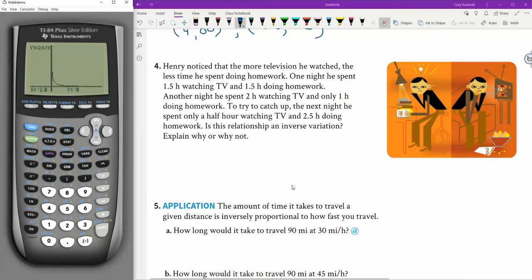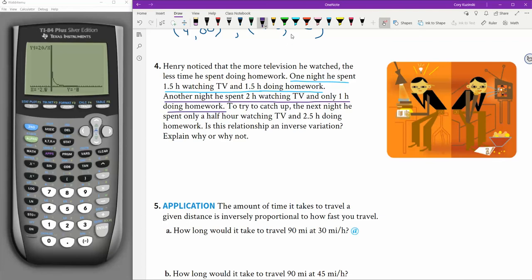Henry noticed that the more television he watched, the less time he spent doing homework. One night, he spent 1.5 hours watching TV and 1.5 hours doing homework. Okay. Another night, he spent 2 hours watching TV and only 1 hour doing homework. To try and catch up the next night, he spent only a half hour watching TV and 2.5 hours doing homework. All right.